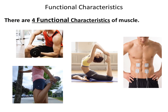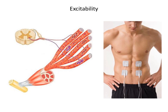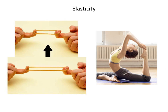Next, we discuss the four functional characteristics of muscle. The first functional characteristic is contractility — muscle has the ability to shorten in length to generate a force. The next is excitability — muscle has the ability to respond to an electrical impulse or an action potential. The next is extensibility — muscle has the ability to be stretched. And finally, the last functional characteristic is elasticity. Once stretched, muscle has the ability to recoil and return back to a resting shape or length.